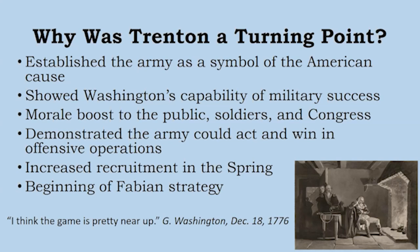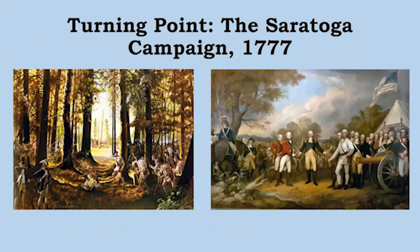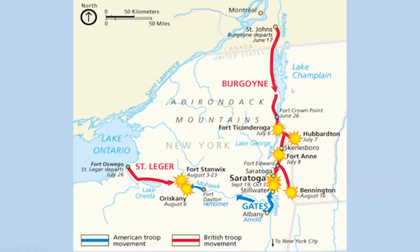The next turning point is the Saratoga campaign of 1777 — a major campaign launched by the British and coordinated by officials in London, Canada, and New York City. This campaign covered a wide swath of New York State and the Adirondack Mountains, and had two prongs initially. The first, under Burgoyne, came down from Canada — from Montreal and St. John's in the summer — moving south along Lake Champlain with a large force of loyalists, Redcoats, and Hessians, using Lake Champlain and Lake George as logistical highways.